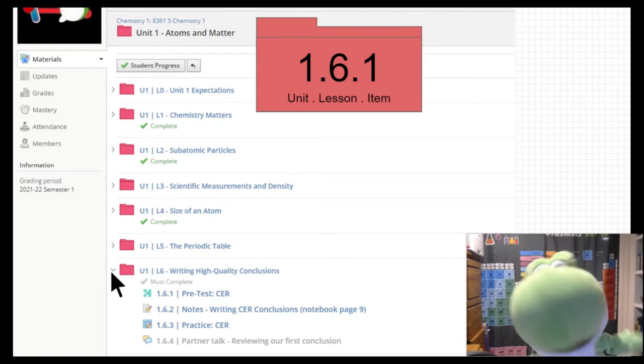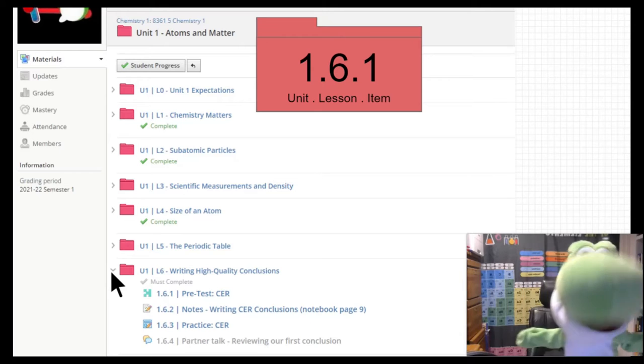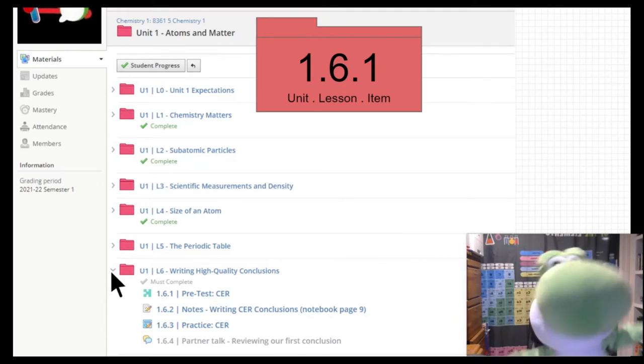For example, 1.6.1 represents unit one, lesson six, and the first item. I really recommend that you go in order in Schoology, starting from top and working your way down through each of the items.